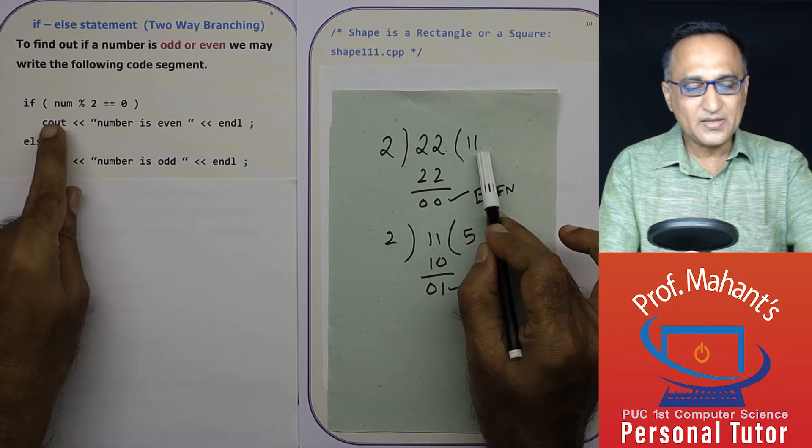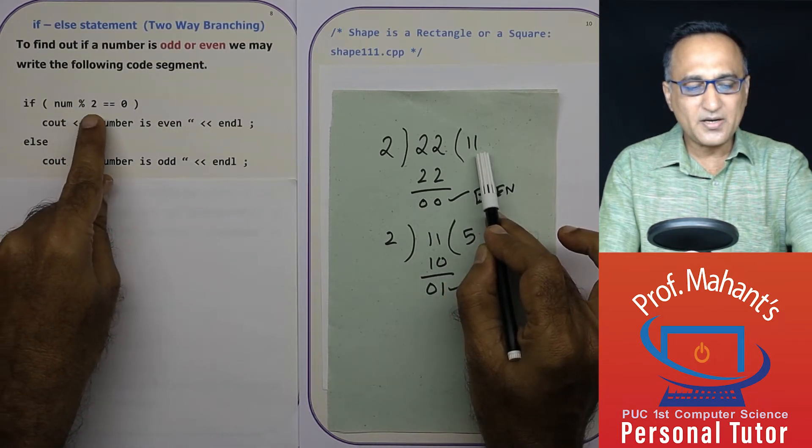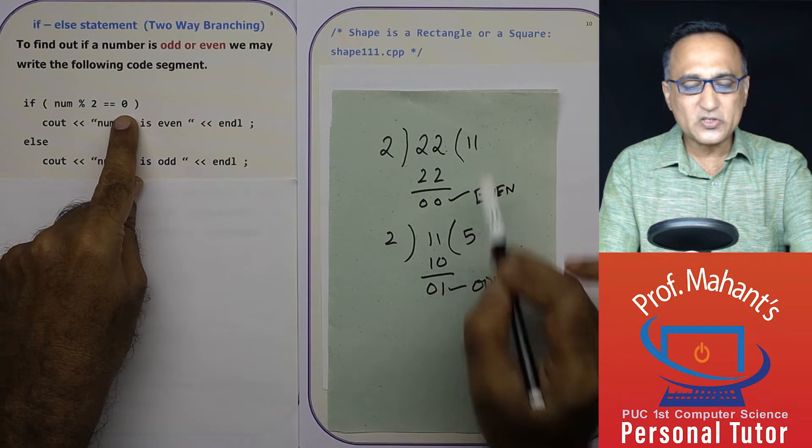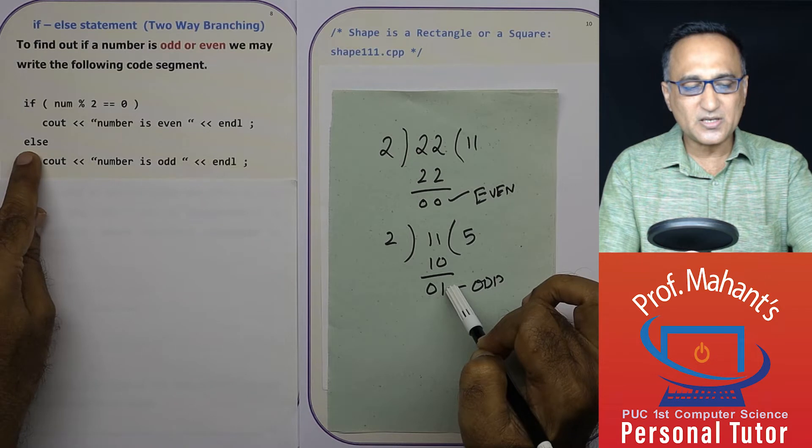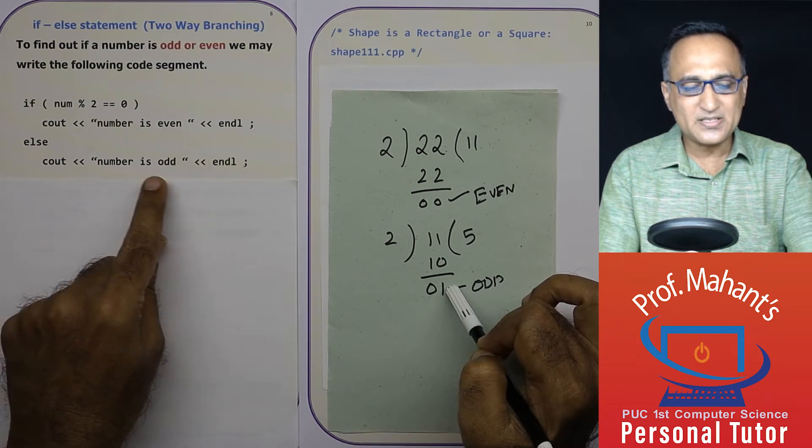Suppose I enter 11. 11 divided by two, the remainder is one. This is not equal to zero. One is not equal to zero. So the else becomes true and number is odd.